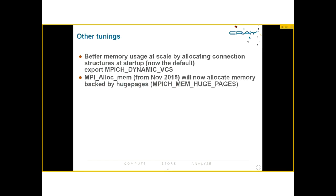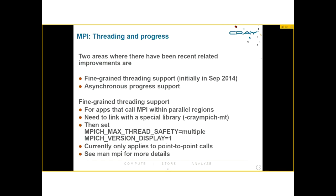Other tuning options: better memory usage at scale is achieved by allocating connection structures at startup, which is now the default — you can export MPICH_DYNAMIC_VCS for this. From November 2015, MPI_Alloc_mem will allocate memory backed by huge pages, which is beneficial for performance.